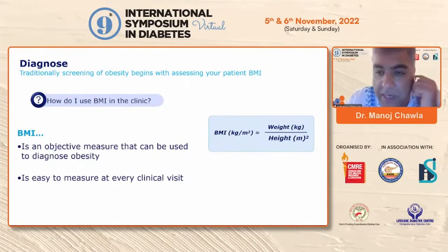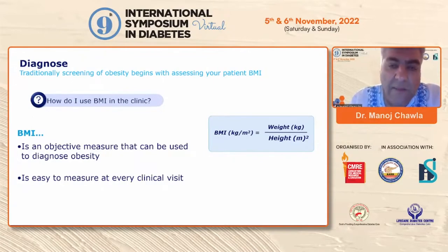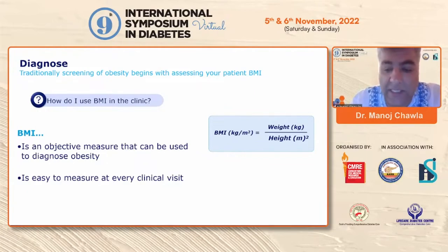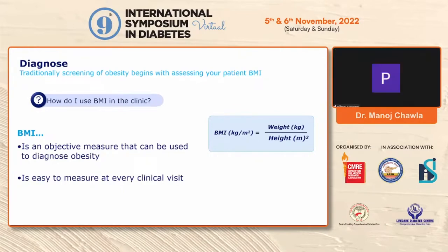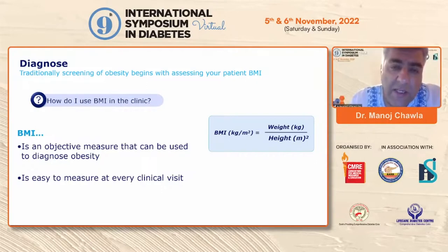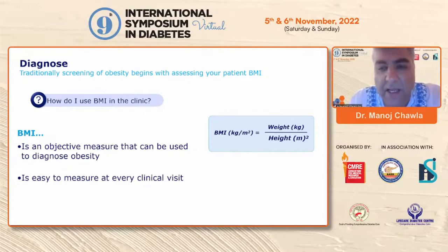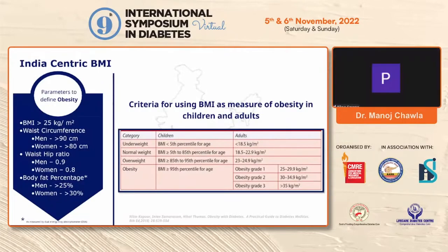What is BMI? BMI in kg per meter squared is an individual's weight in kilograms divided by height in meters squared. It's an objective measure that can be used to diagnose obesity, and that's been the only means we've been using. We should continue looking at BMI — in fact, it should be addressed at every clinic visit. A lot of today's electronic health record software have everything automated. Height doesn't change for an adult; you put in the weight and the BMI numbers will appear on your screen each time.